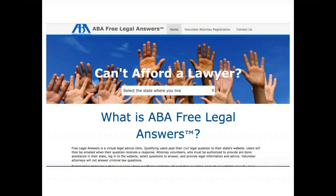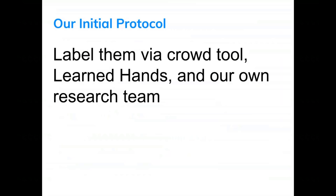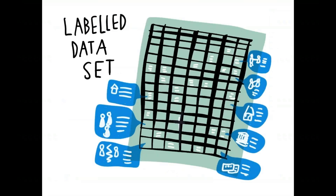The ABA Free Legal Answers population will hopefully be more representative than Reddit, which skews toward male, young internet users — very different from the general population. One useful application in the ABA context is helping connect people directly to the attorneys they need: one problem with these systems is that questions often go unclaimed by attorneys and never get answered. If we can make a best guess at what practice area a question requires, we can do better matching.